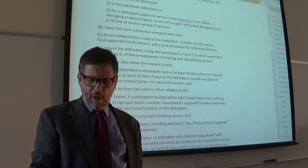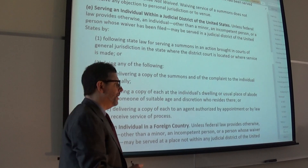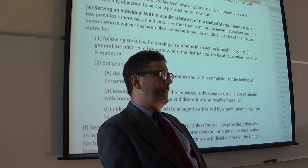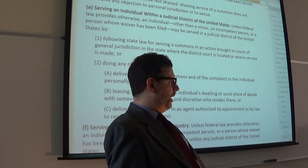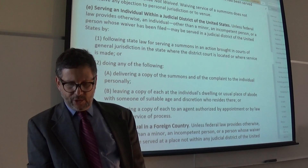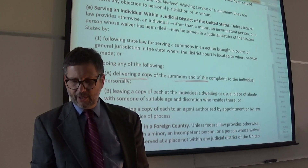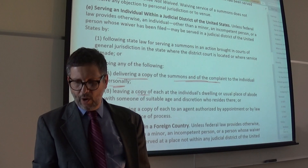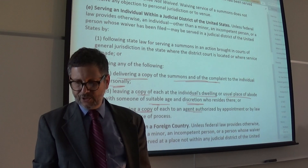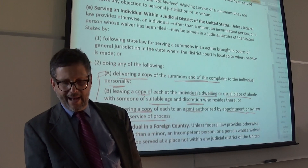Rule 4, we talked about in detail. I'm not going to talk about it in detail here in this review session, but just by way of example, I'll talk about Section 4E, which indicates how you satisfy the notice requirement under the FRCP for service of the summons and the complaint. There are a number of ways you can do it. These federal bases under 4E2 include: delivering a copy of the summons and the complaint to the person personally; leaving a copy at their dwelling or usual place of abode with someone of suitable age and discretion; or delivering a copy to an agent authorized by appointment or by law to receive service of process.